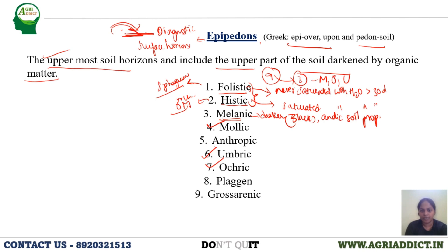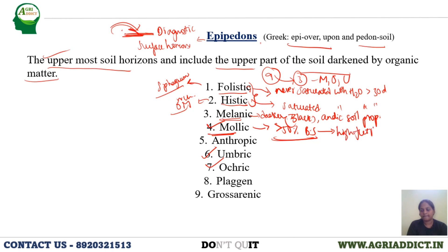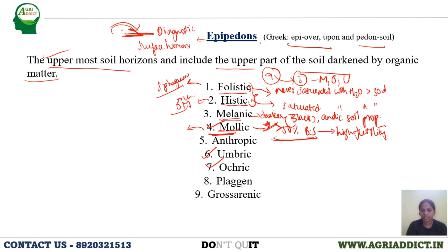Mollic epipedon is very important. It has more than 50 percent base saturation, which implies high fertility of the soil. Soils having mollic epipedons — the mollisols we will see in later soil orders classes — are usually the most productive agricultural soils of the world, because of this mollic epipedon having more than 50 percent base saturation.